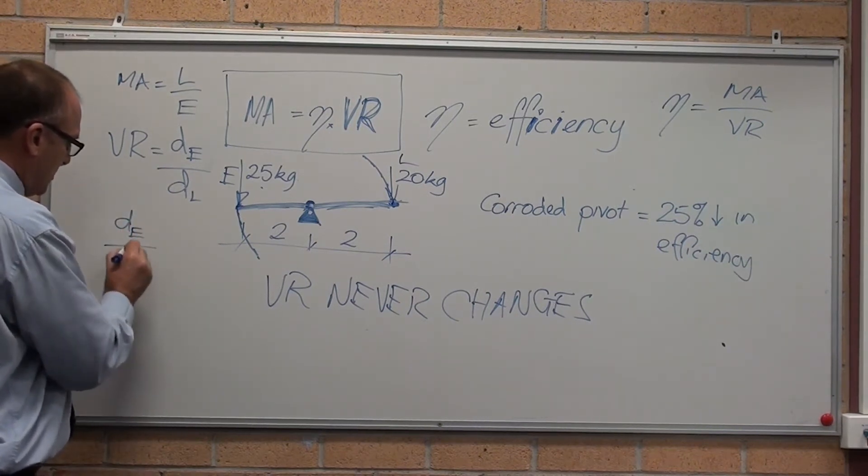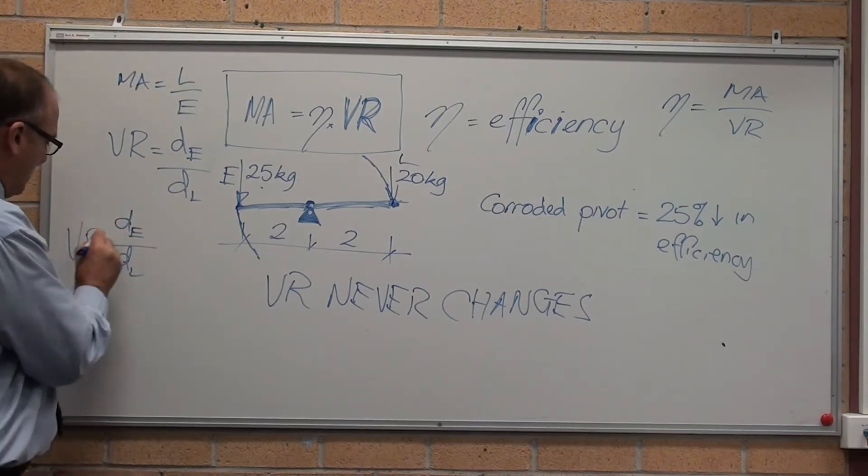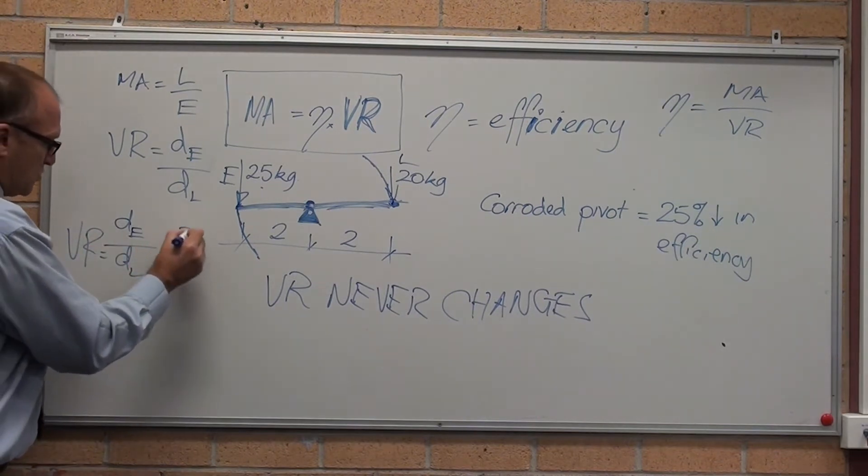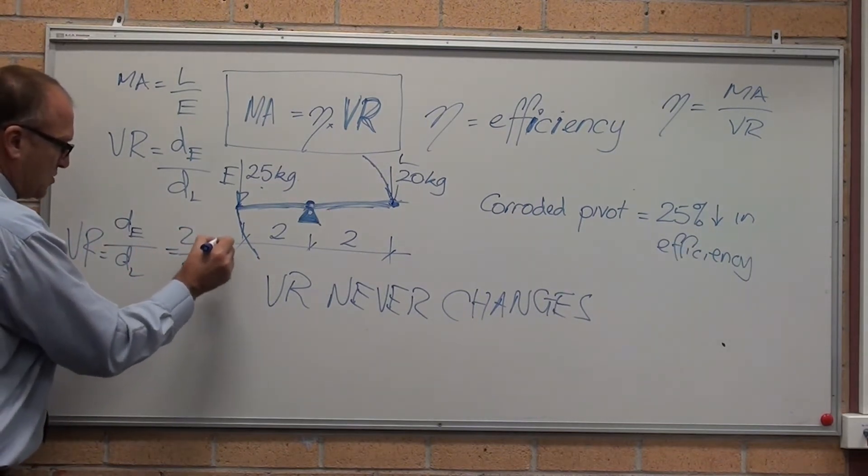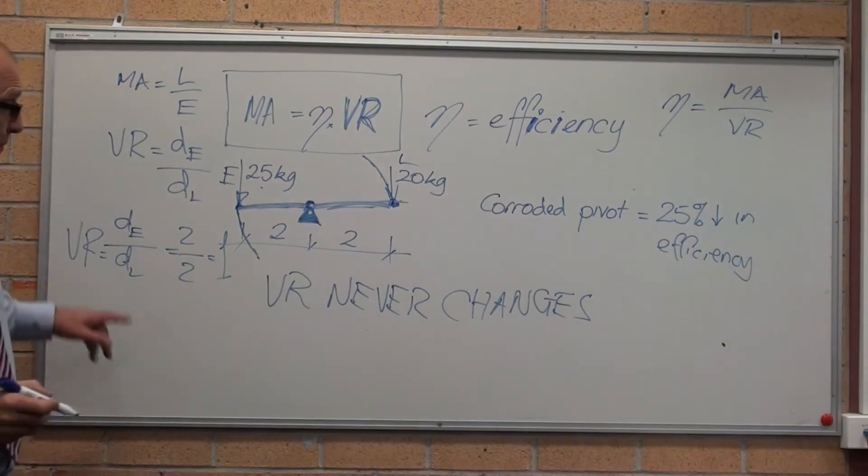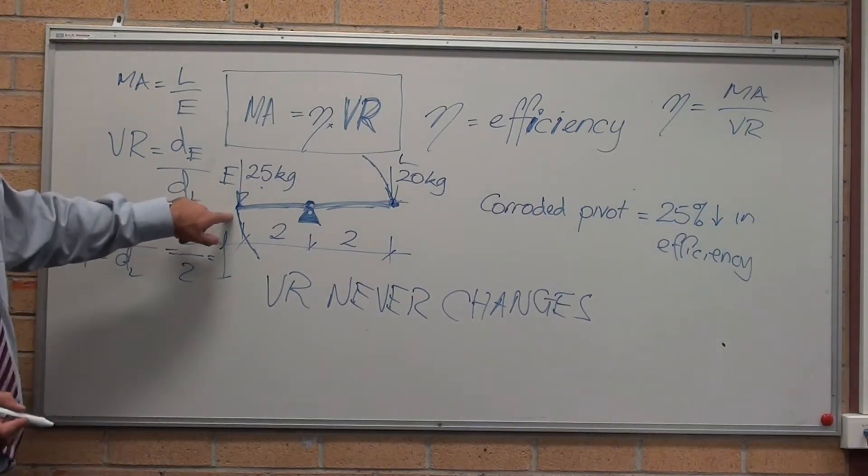Distance on the effort, divided by distance moved by the load, equals 2 on 2, equals 1. That's our velocity ratio for this example.